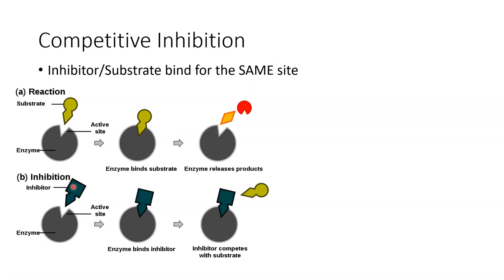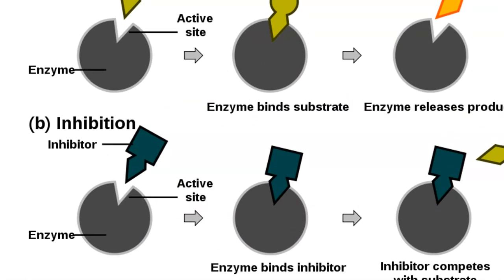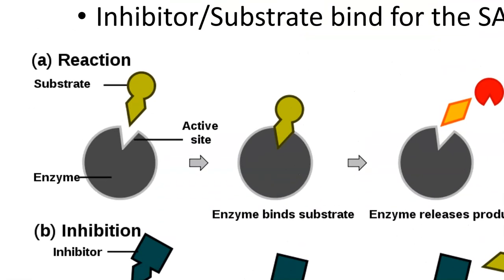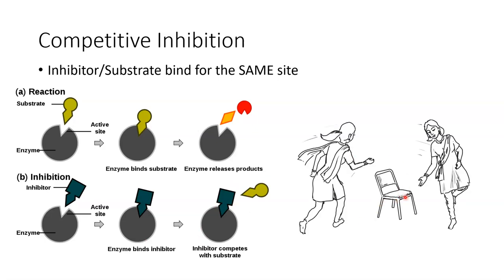In competitive inhibition, the inhibitor and the substrate are binding for the same site. The inhibitor looks very similar in shape to the active site — you can see this triangle portion in the inhibitor is very close in shape to the triangle portion of the substrate. So a competitive inhibitor can fit into the active site, and if it's occupying that active site it will not allow the substrate to bind.